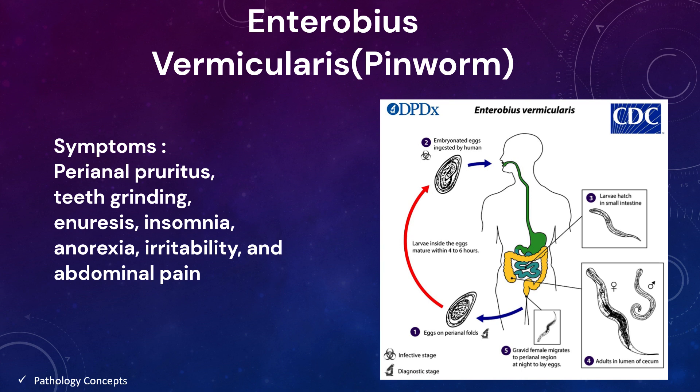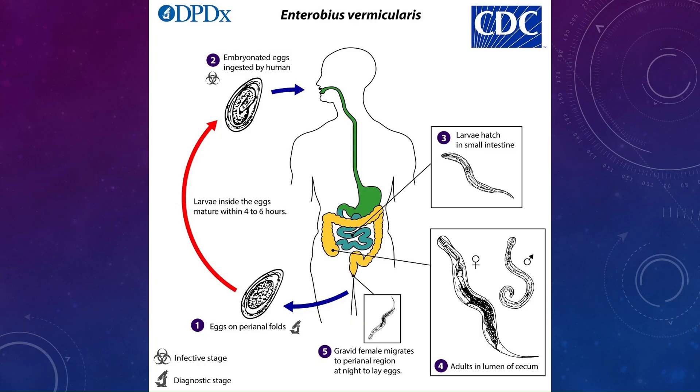Symptoms of Enterobius vermicularis infection include perianal pruritus, teeth grinding, enuresis, insomnia, anorexia, irritability, and abdominal pain, which can mimic appendicitis.